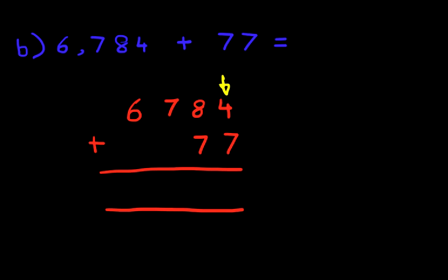4 plus 7 is the same as 7 plus 4. So 7, and then you add on 4, the answer is 11. Put 1 here and put 1 here.